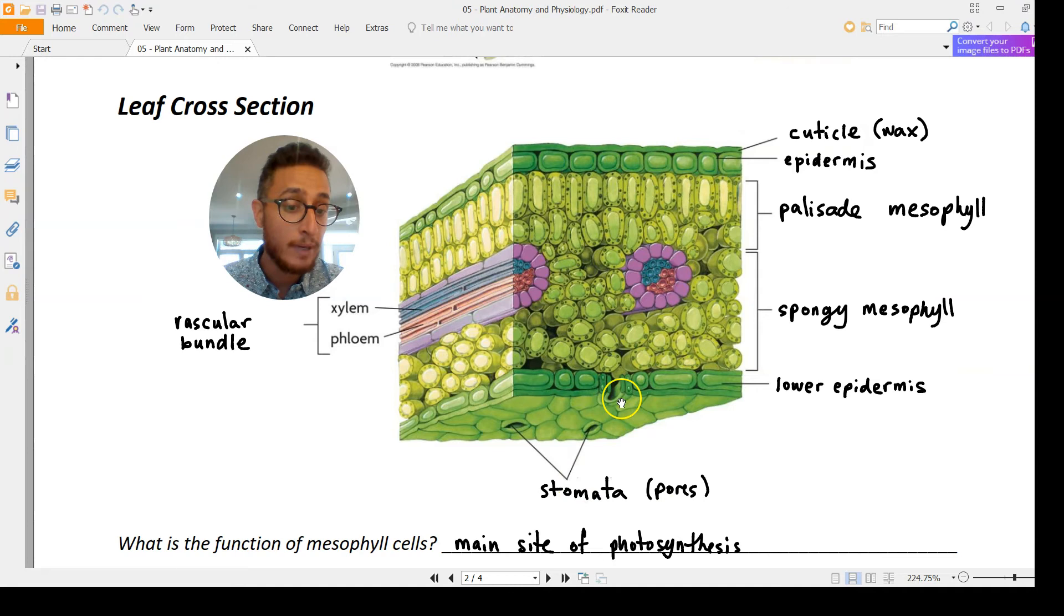They're kind of like smart pores where they only open when photosynthesis is going to take place. Those specialized holes are given the fancy name of stomata. One stomate and many stomata. Each stomata consisting of just two cells called guard cells.